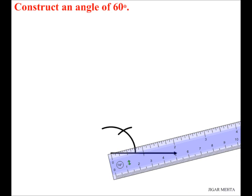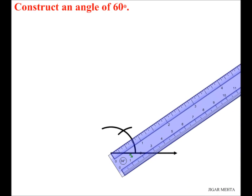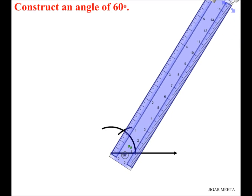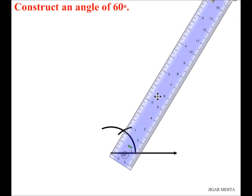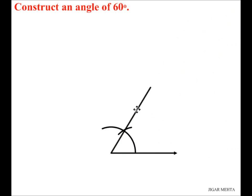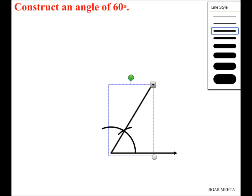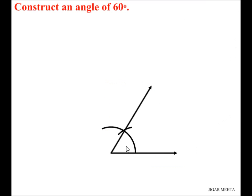Now I'm going to join the starting point of the ray and the point on the arc with the help of a ray. Let me draw a line first, and now I'll convert this line into a ray. This angle that I've got is a 60-degree angle. Thank you.